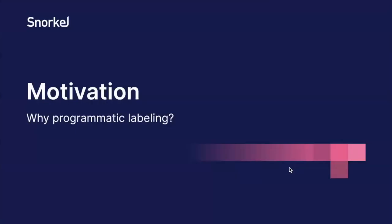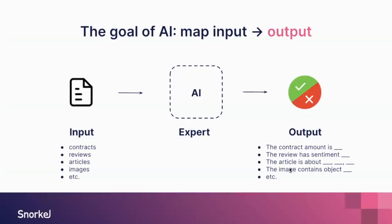I'll start with the motivation — why programmatic labeling in the first place. Let's start at the very elementary goal of AI, which is really mapping an input of any kind — conversations, contracts, reviews, articles, images, or a situation and context — and then mapping it to an output, like a decision that needs to be made. For example, what type of input data this is, is there a specific amount to extract, what is the topic of the article, etc.